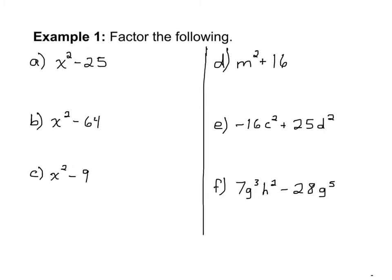Let's look at some examples of factoring differences of squares. In part a we have x squared minus 25. x squared is a perfect square and 25 is a perfect square. The square root of x squared is x and the square root of 25 is 5. So our two factors are x plus 5 and x minus 5. It doesn't matter which order you put them in.